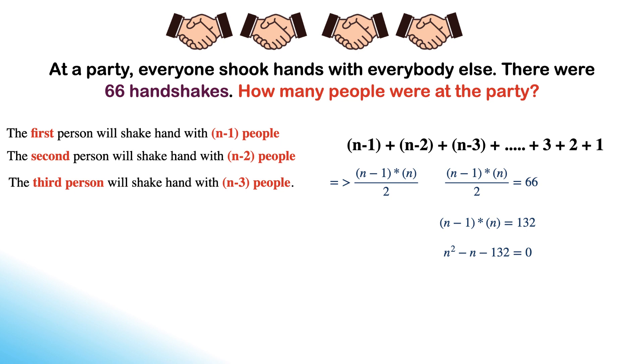This is nothing but a quadratic equation. After solving the quadratic equation, we get n minus 12 or n plus 11 equals 0. Here, either n equals 12 or n equals minus 11.